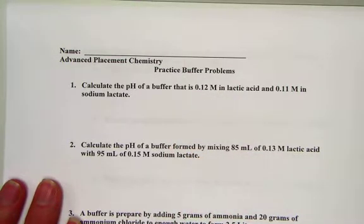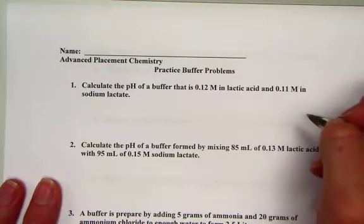We'll need a calculator and our Appendix D as the tools that we'll use to calculate buffered systems. Appendix D will help us find the Ka values to use in the Henderson-Hasselbalch equation.